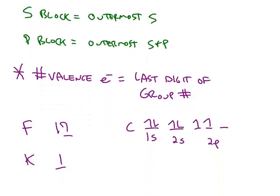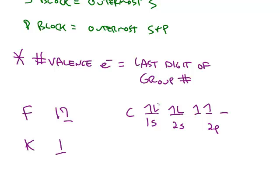So for example, with carbon, we have two electrons in the 1S. We don't count those, but we do count the two electrons in the 2S, and we count the two electrons in the 2P. So carbon has a total of four valence electrons.